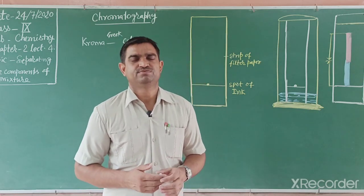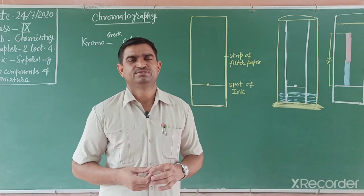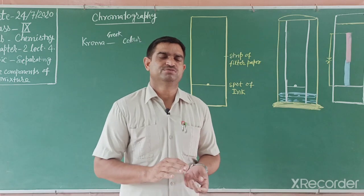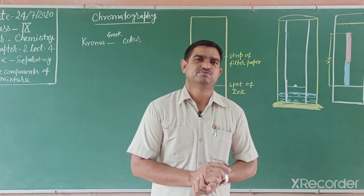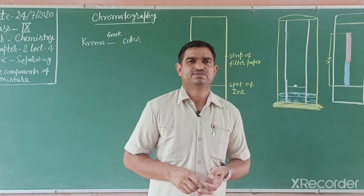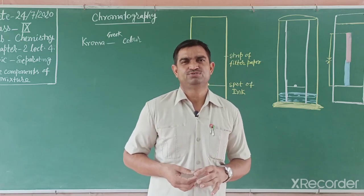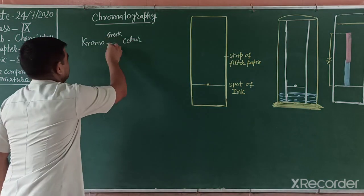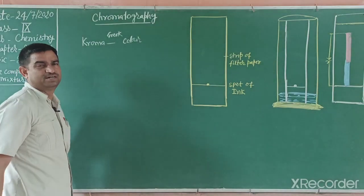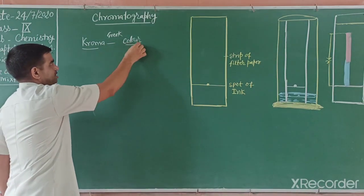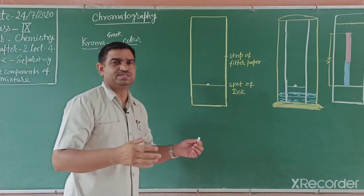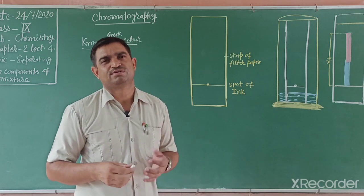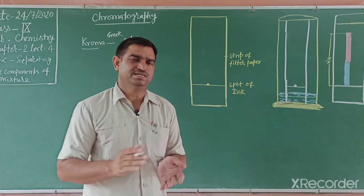First, let us understand what is chromatography. By chromatography we can separate those components found in very minute amounts in nature. Earlier, this technique was used to separate colored substances. The word chromatography comes from the Greek word 'chroma' meaning color, and 'graphy' meaning to study — so chromatography means the study of colors. But nowadays we can also separate colorless substances.